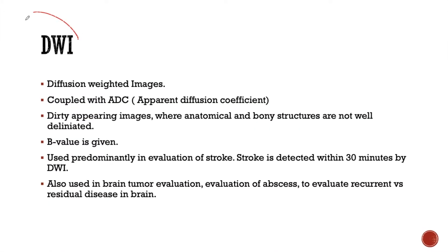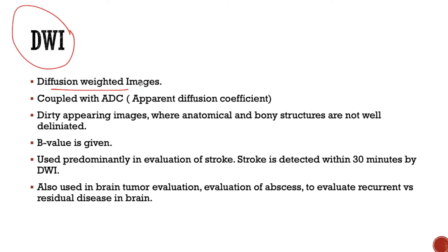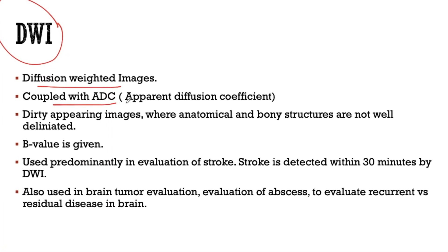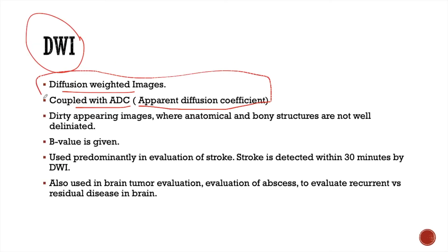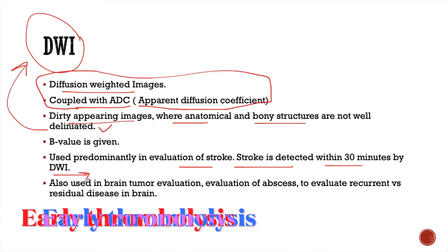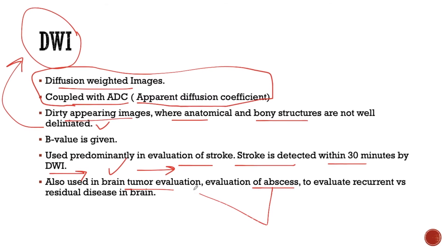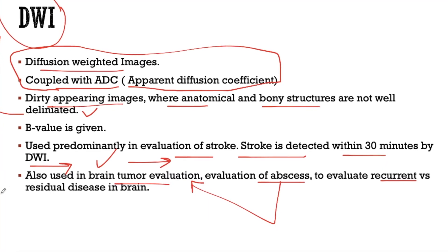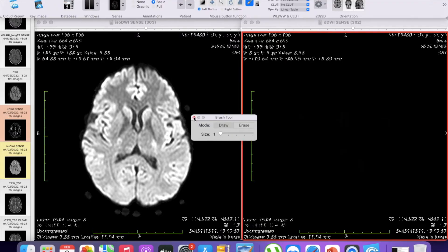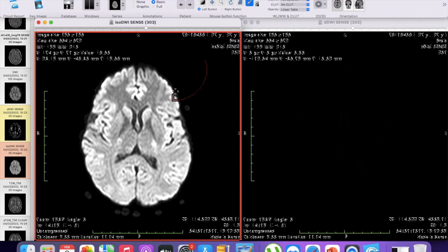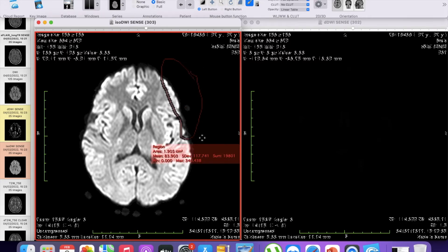Another important imaging sequence in the brain is the DWI or diffusion weighted image. This image is usually coupled with the ADC map, or the apparent diffusion coefficient map. To recognize these images, we should look at the dotty-appearing images where the anatomical and bony structures are not well delineated. This image is predominantly used in the evaluation of stroke — stroke is detected within 30 minutes by the diffusion weighted image, which helps in early thrombolysis and decreasing morbidity and mortality in stroke patients.